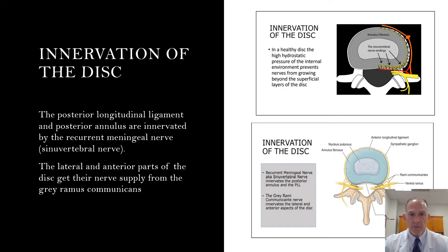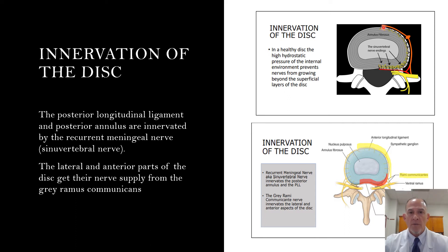Looking at the innervation of the intervertebral disc, the posterior longitudinal ligament and posterior annulus are innervated by the sinuvertebral nerve, also known as the recurrent meningeal nerve. The anterior longitudinal ligament and the lateral annulus are innervated by the gray rami communicantes. In a healthy disc, due to the high hydrostatic pressure, we only see nerve and vascular ingrowth into the outer one third of the annulus — the hydrostatic pressure in all directions from the center outward prevents nerve and arterial ingrowth.